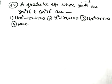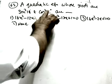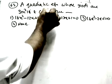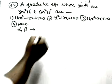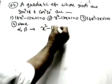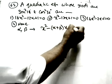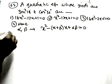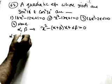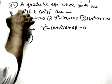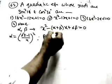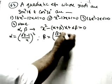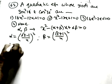Now find a quadratic equation whose roots are sin²18° and cos²36°. Let α = sin²18° = ((√5−1)/4)² and β = cos²36° = ((√5+1)/4)².